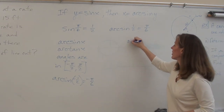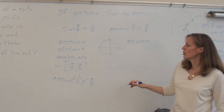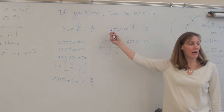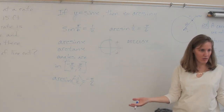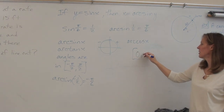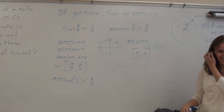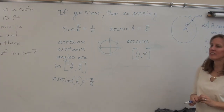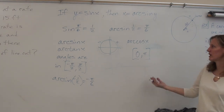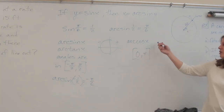What about arc cosine? The problem is that cosine is positive in both the first and fourth quadrants. So if we went from negative π/2 to π/2, we wouldn't have answers for any of the negative values. So for arc cosine, we go from 0 to π. To summarize: for arc sine or arc tan it's [-π/2, π/2]; for arc cosine it's [0, π].